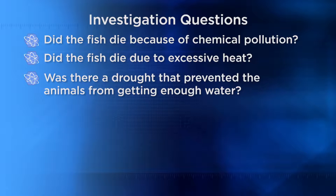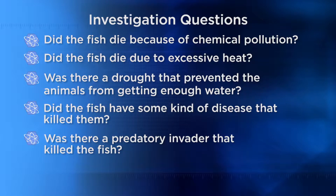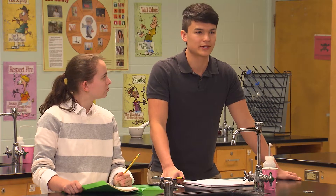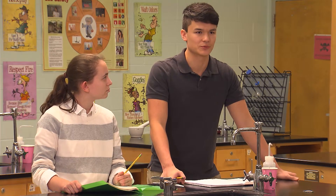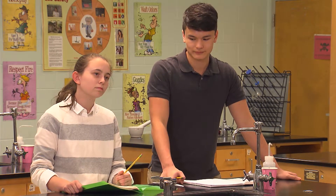Another group also had the same question about chemical pollution, and they added two more: Did the fish have some kind of disease that killed them? And was there a predatory invader that killed the fish? They noted the second option may be less likely since so many fish were killed in such a small area. Good job — that's well thought out.